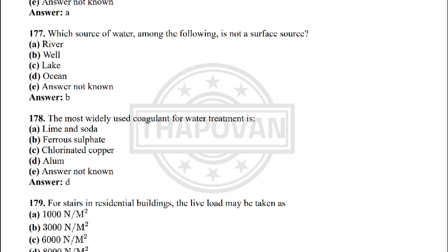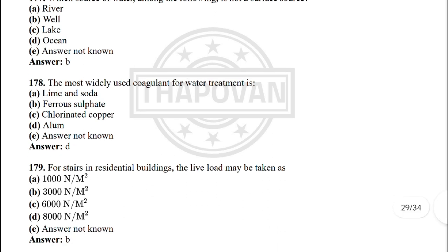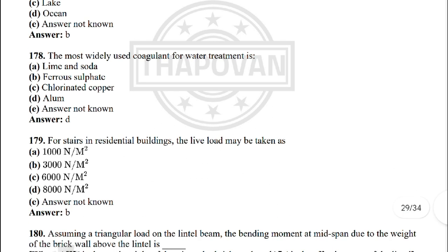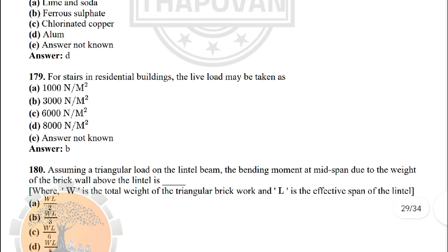Next: which of the following sources of water is not a surface source? — the correct answer is option B: well. Next: the most widely used coagulant for water treatment is — the correct answer is option D: alum.